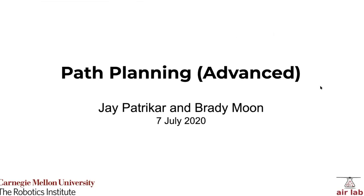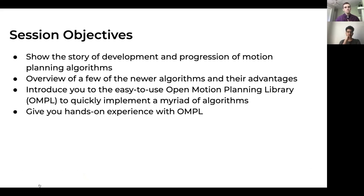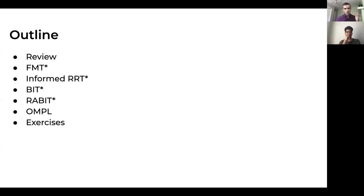Jay and I are going to talk about path planning today. Our presentation picks up from what Basti talked about. We want to show the story of the development and progression of motion planning algorithms, continuing from where Basti left off. We'll cover newer algorithms, their advantages and disadvantages, introduce the Open Motion Planning Library (OMPL), and give some hands-on experience. We'll first review what Basti covered, then I'll go through FMT*, Informed RRT*, BIT*, and RABIT*, and then Jay will take over to talk about OMPL and the exercises.